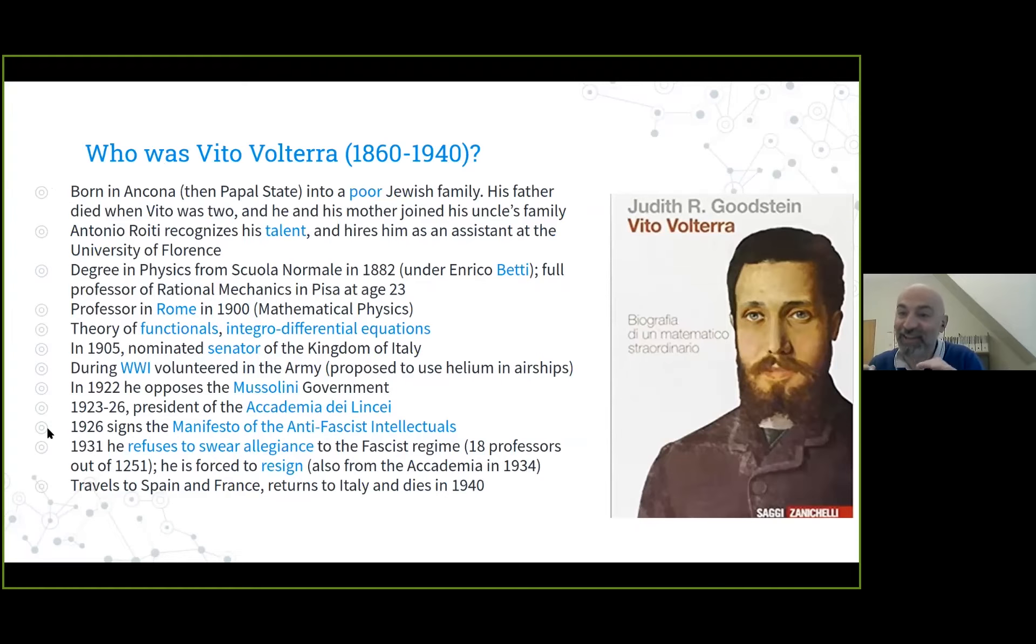Who was Vito Volterra? He was born in a poor Jewish family in the papal state, and his father died when he was two. His mother and he had to join his uncle's family. Fortunately, he displayed an amazing mathematical talent from early on, and one of his professors convinced the family to let him study in college. He went to the Scuola Normale Superiore di Pisa, the best mathematics school in Italy under Enrico Betti, probably the best mathematician in Italy. He started this meteoric ascent in his career. He was a professor at 23, moved to Rome with the best chair in mathematical physics, made incredible contributions to functionals, differential equations, integral differential equations, was nominated a senator, and volunteered at age 40-something in the army during World War I.